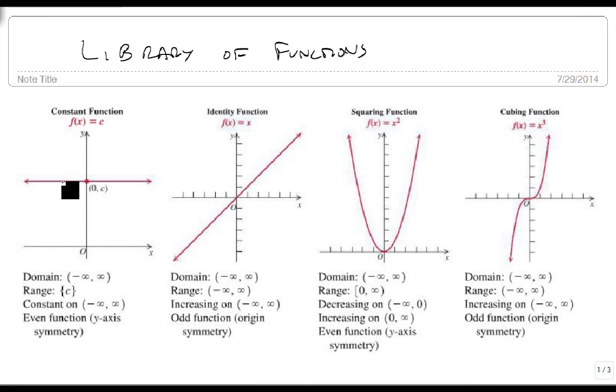A constant function is a horizontal line at C. Notice the domain is everything, but its range is only that value C, and it's constant from minus infinity to infinity. It also happens to be an even function. This will list all of these things that we've talked about to this point.